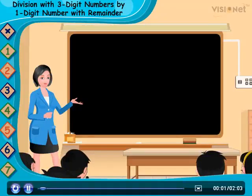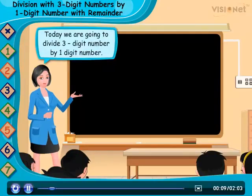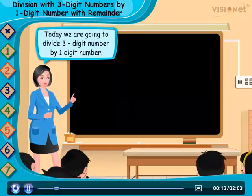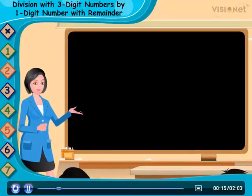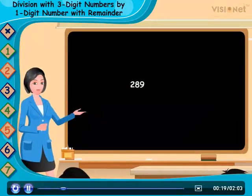Division with three-digit numbers by one-digit number with remainder. Hello students, today we are going to divide three-digit number by one-digit number. Look at the board. Here we divide 289 by 2.